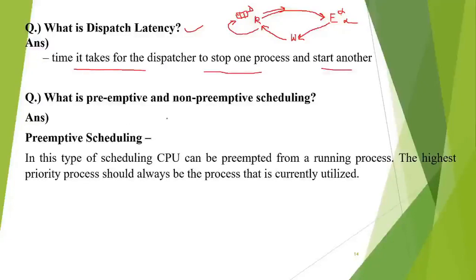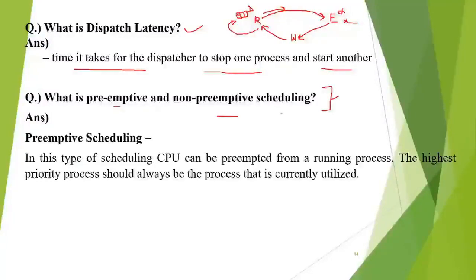Then we have various types of scheduling techniques, basically referred to as scheduling decisions. Scheduling decisions can be preemptive and non-preemptive. Preemptive means forceful snatching of the CPU; non-preemptive means we cannot do forceful snatching. Based on this, the algorithm for selecting a process from the ready queue to give the CPU is decided.